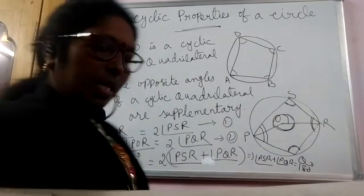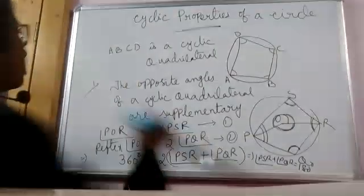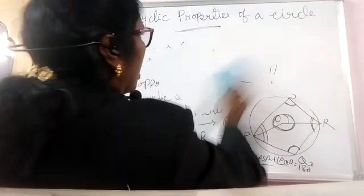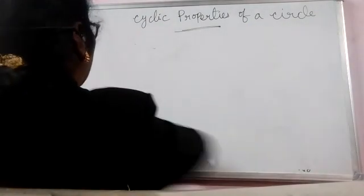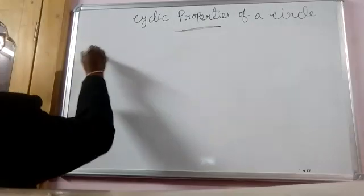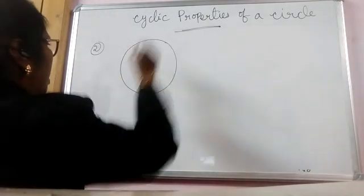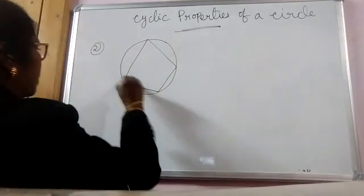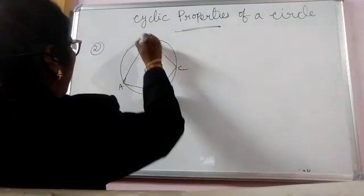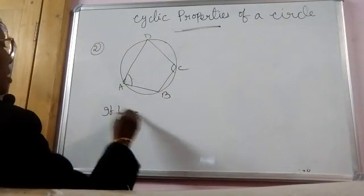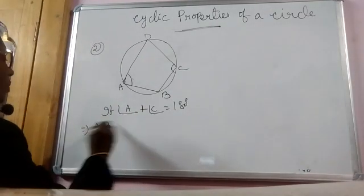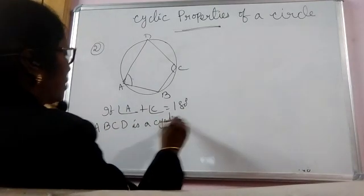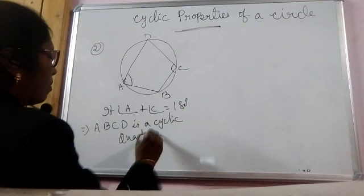The second property is just the converse of this. If the sum of a pair of opposite angles is 180 degrees, then the quadrilateral is cyclic. That is, for quadrilateral ABCD, if angle A plus angle C equals 180 degrees, we can say that ABCD is a cyclic quadrilateral — just the converse of the previous theorem or property.